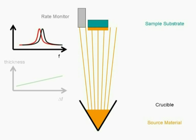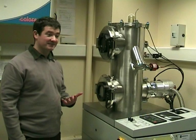Together with a factor describing the position of the rate monitor in the chamber — the tooling factor — this allows the thickness to be calculated.